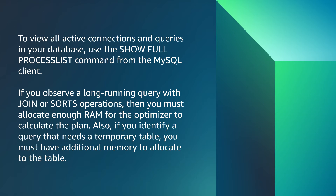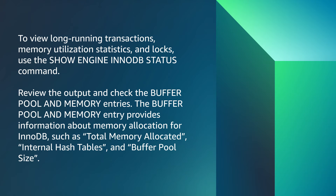If you observe a long-running query with JOIN or SORT operations, then you must allocate enough RAM for the optimizer to calculate the plan. Also, if you identify a query that needs a temporary table, you must have additional memory to allocate to the table. To view long-running transactions, memory utilization statistics and logs, use the SHOW ENGINE INNODB STATUS command.